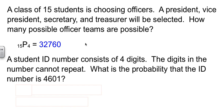So that's how many different arrangements of officers I could get out of those 15 kids. Now, your task is to list all of those possibilities out. Have fun. Just kidding. You don't have to do that. Let's look at another problem. We have a student ID number that's made up of four digits, and the digits in the number cannot repeat.